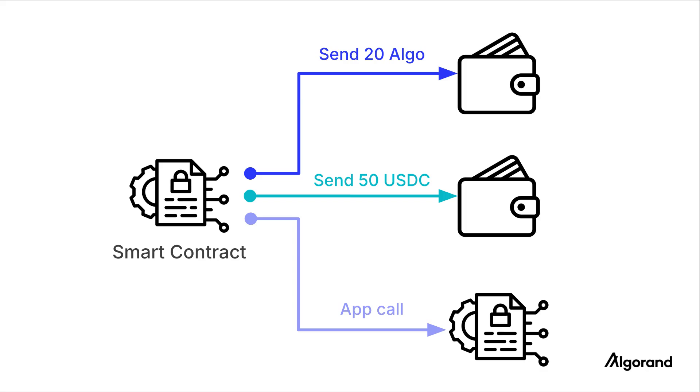Algorand smart contracts can send all types of Algorand transactions, and these transactions are called inner transactions. So what is it, and how does it work?